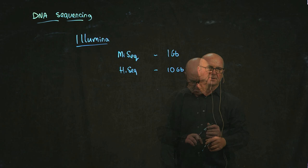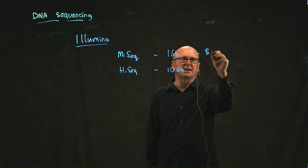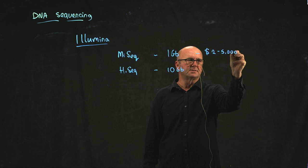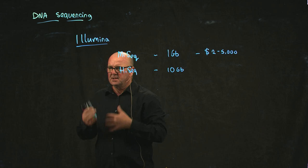And the cost for a MySeq run is, depending exactly how you do it, but it's in the order of two to five thousand dollars. So it just really depends how many different samples you put in, how many library preps you do, and each of the steps. If you're just doing one sample, it's cheaper. If you do multiple samples mixed together, it gets more expensive.